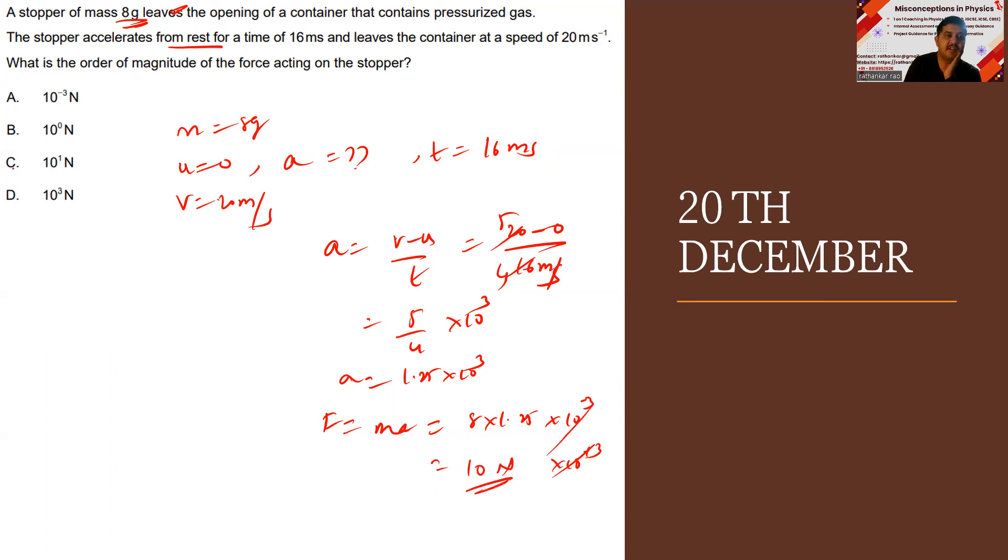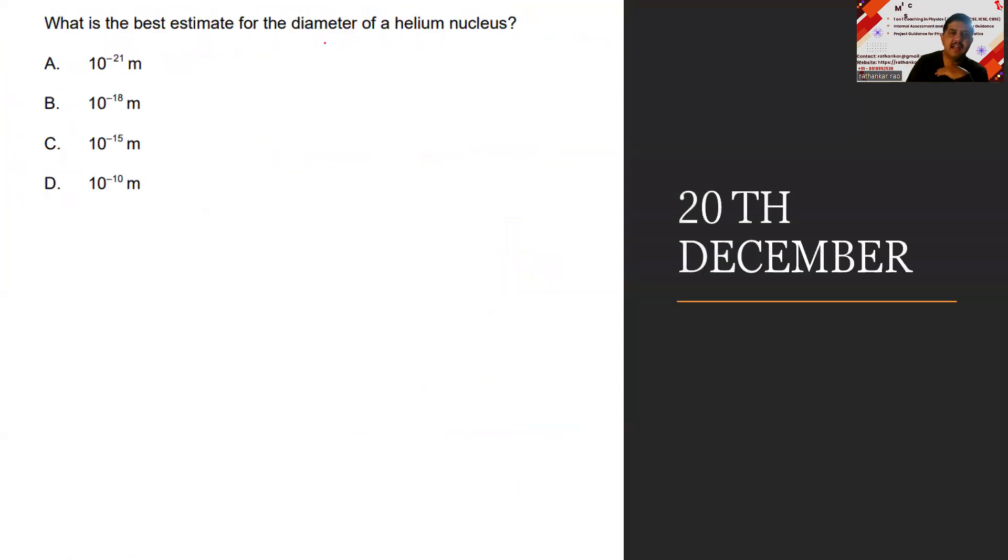This goes away. 8 into 1.25 is nearly 10 newtons. So the order of magnitude is 10 to the power 1 newton. Next, what's the best estimate of the diameter of a helium nucleus?